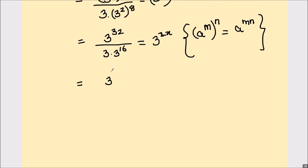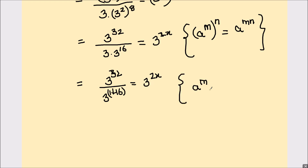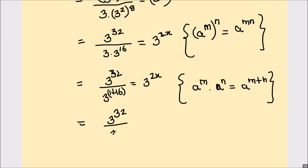Now on the left hand side we have 3 raised to power 32, and in the denominator we will have 3 raised to power 1 plus 16, equals 3 raised to power 2x. We have used the law a raised to power m times a raised to power n equals a raised to power m plus n, so that's going to be 1 plus 16. So we have 3 raised to power 32 divided by 3 raised to power 17 equals 3 raised to power 2x.